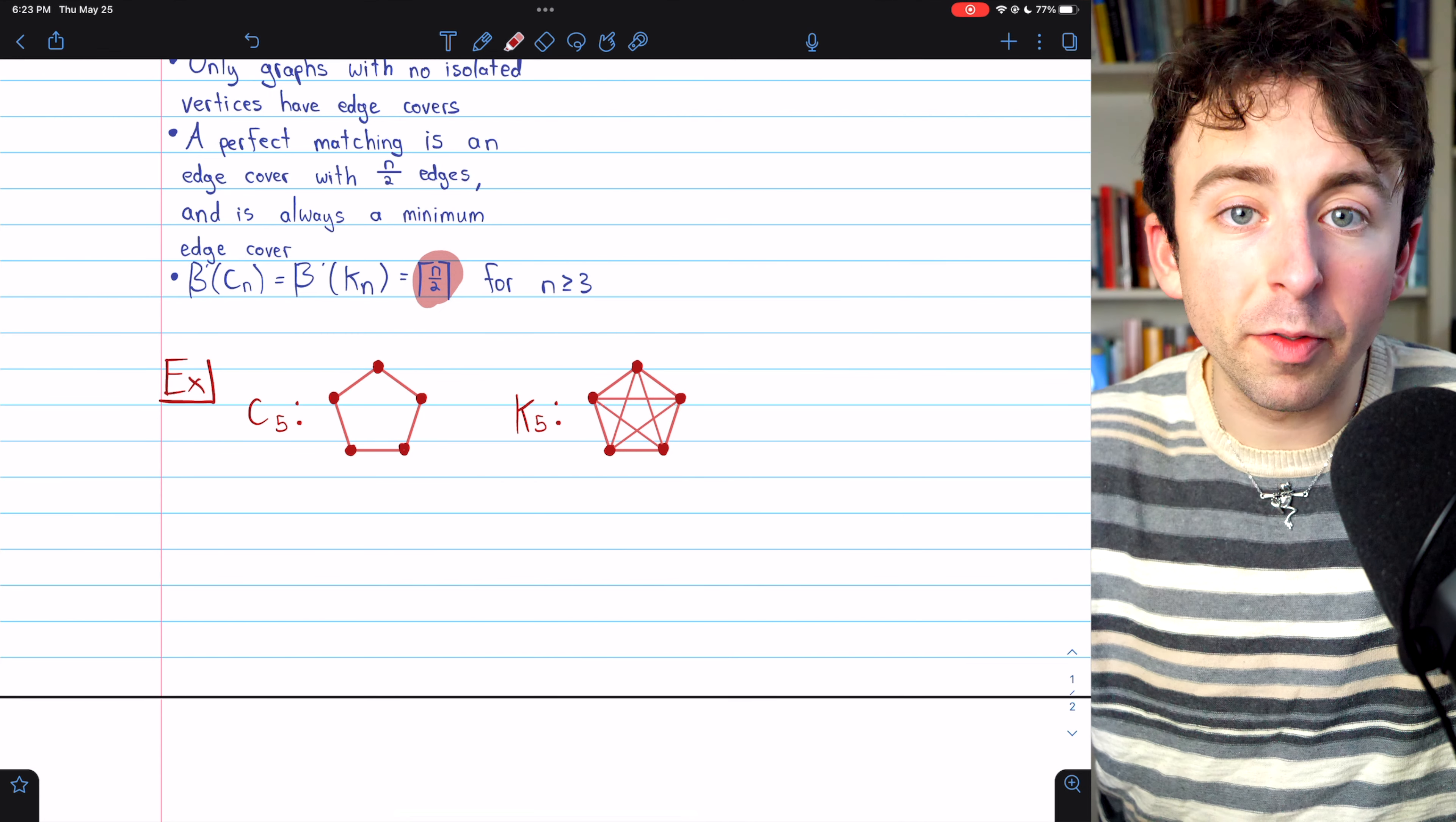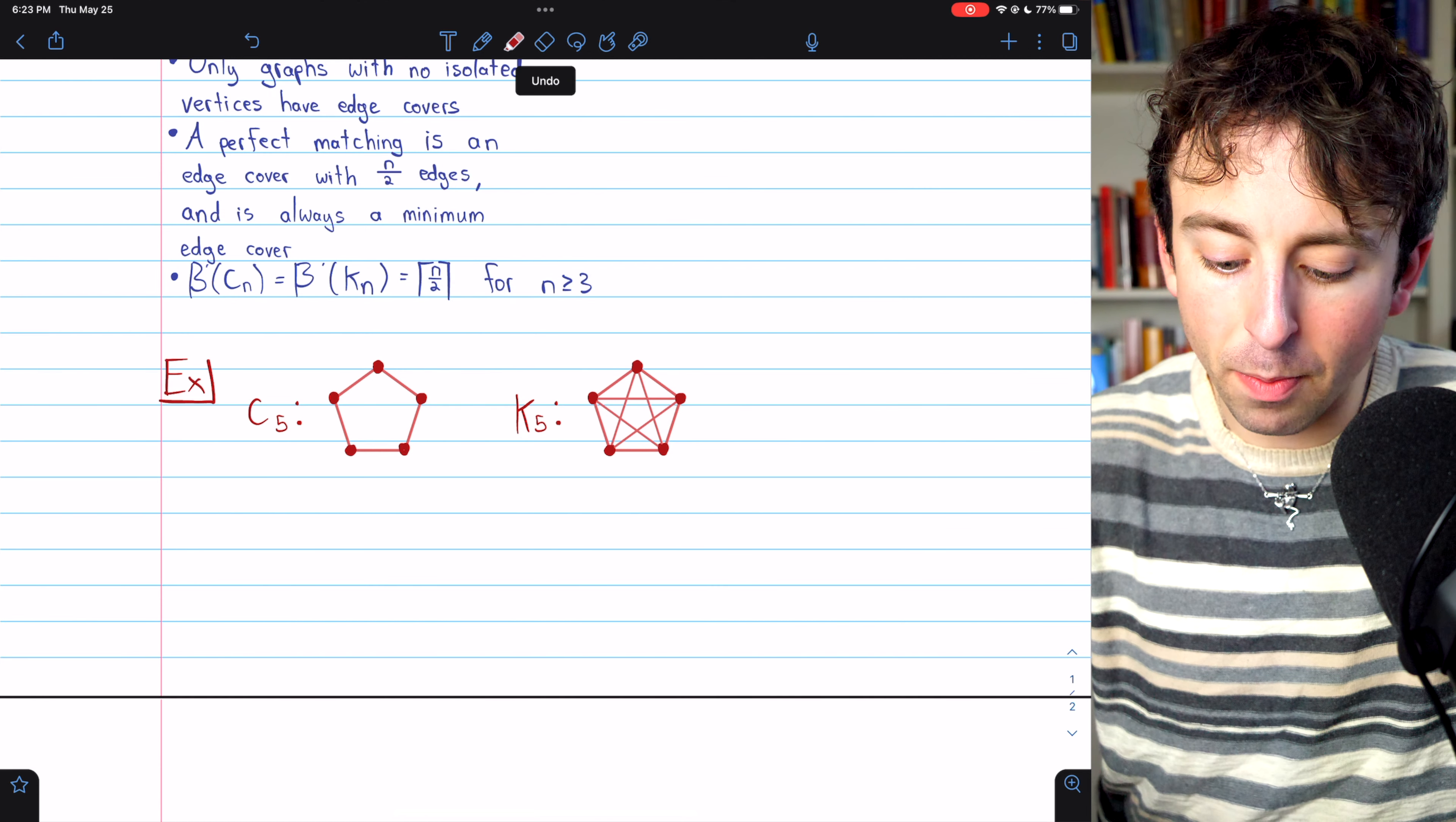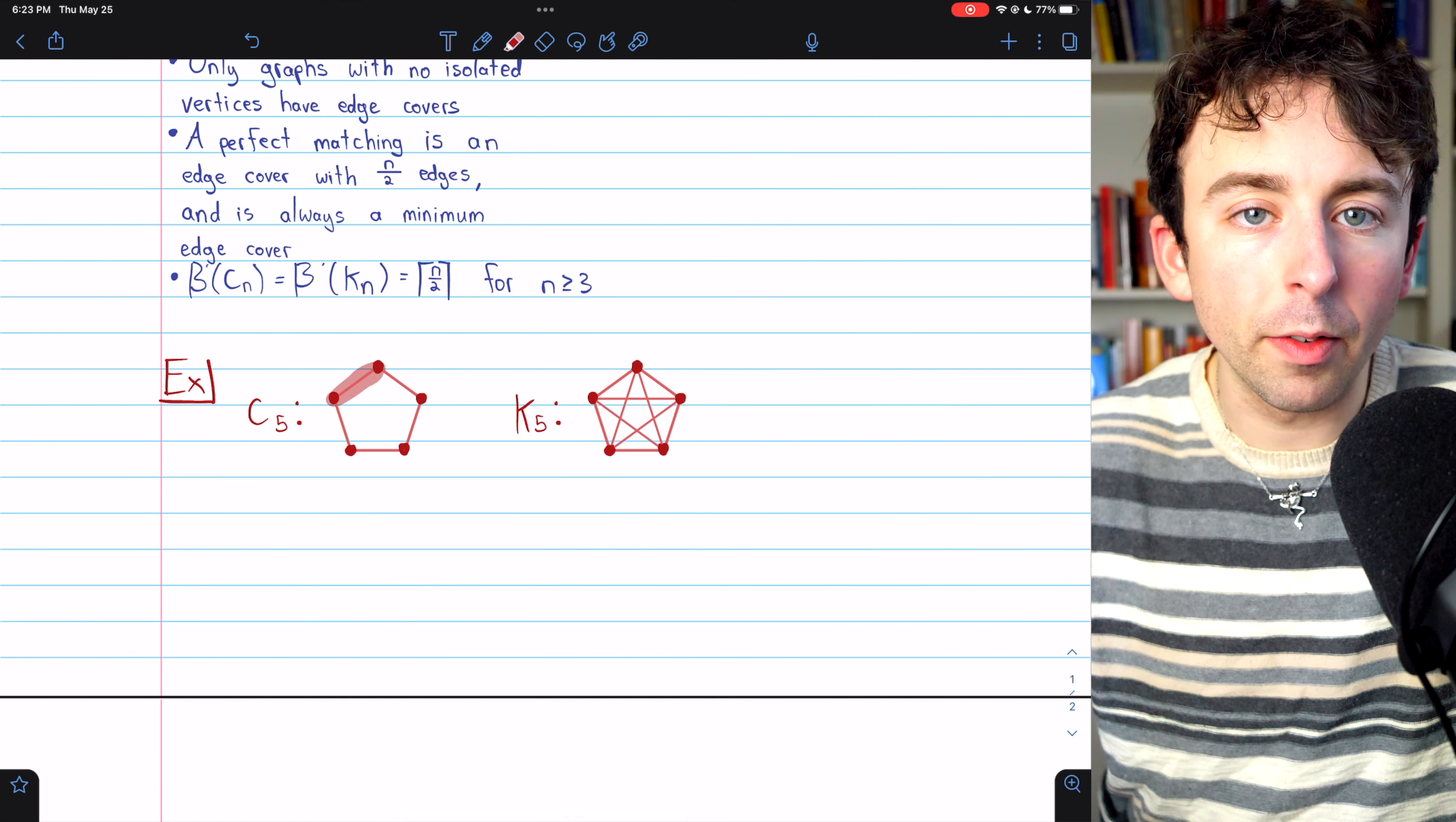So in this case, it should be five over two rounded up, which is three. And that's because it doesn't matter what edge we pick to be in our cover. First,